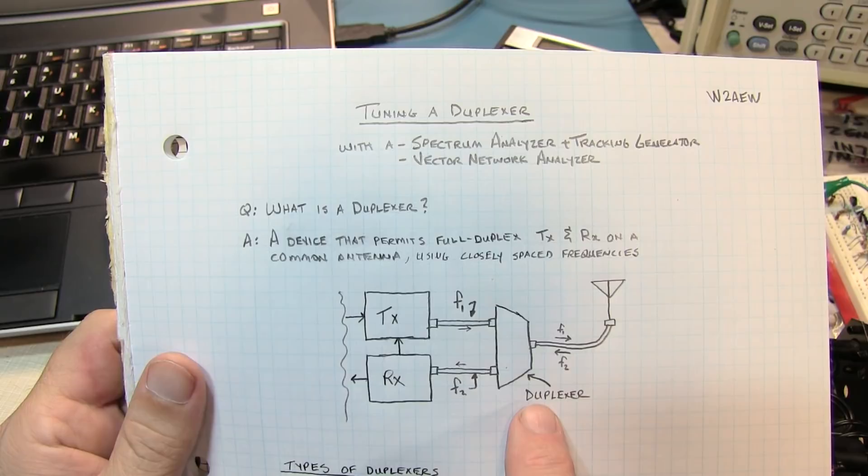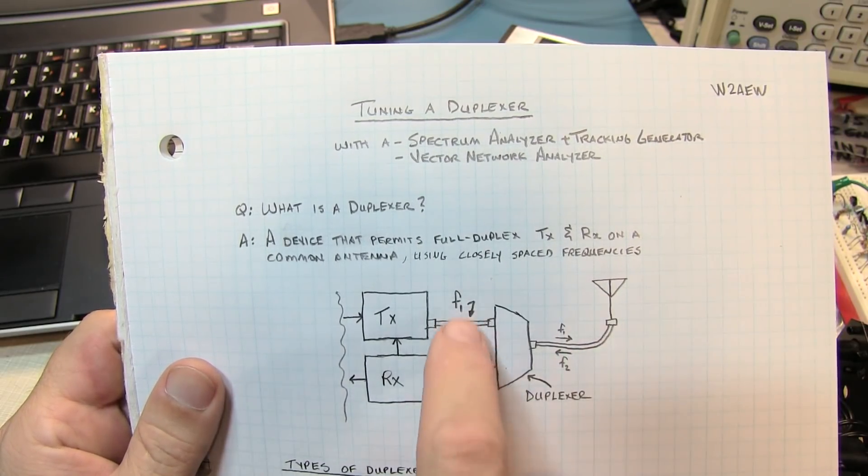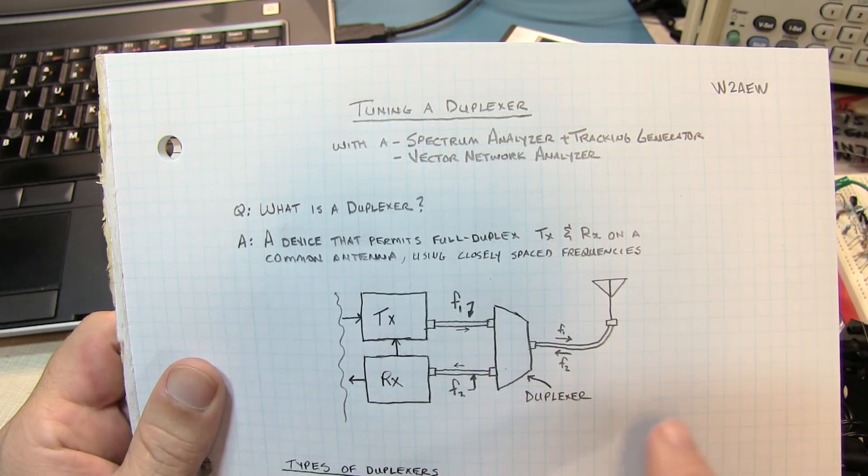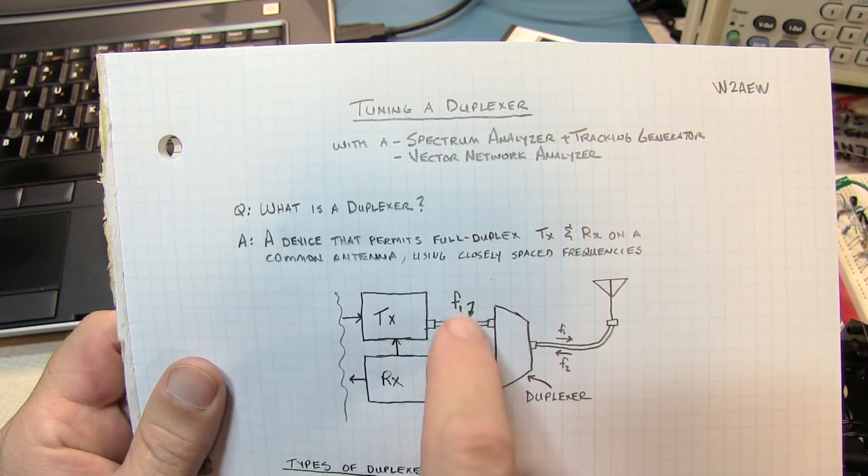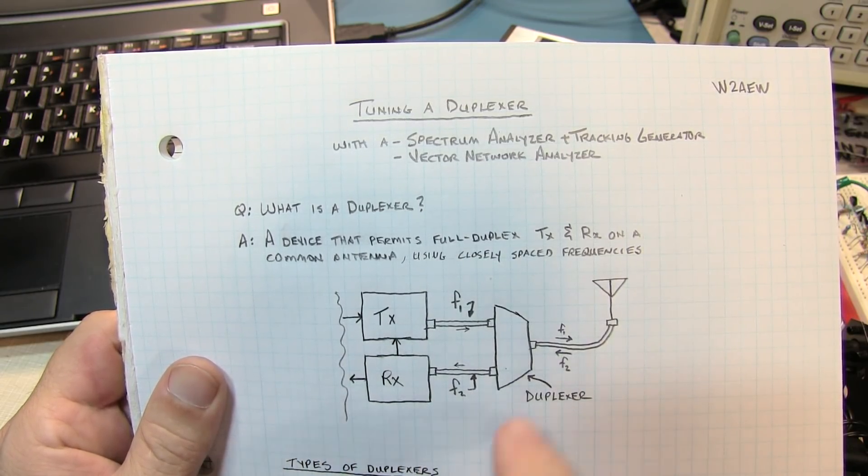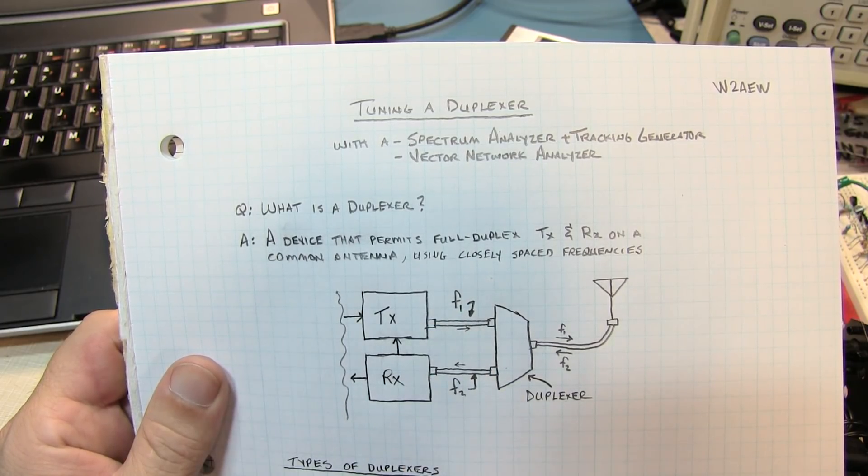A duplexer is a device that permits full duplex transmit and receive through a common antenna using relatively closely spaced signals. A diplexer on the other hand typically will separate frequencies by band, maybe VHF and UHF. But a duplexer typically works within a common band where the frequencies can be very closely spaced together.